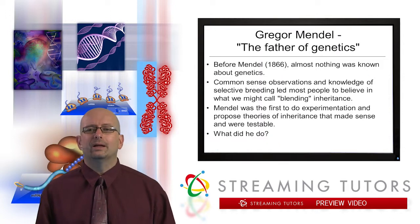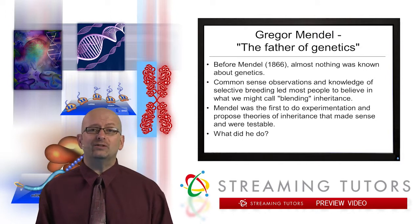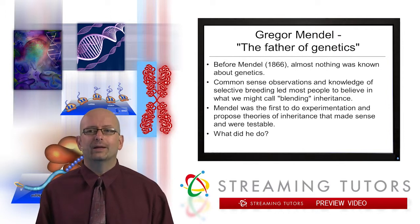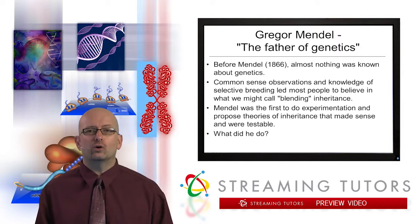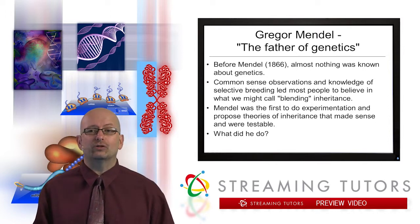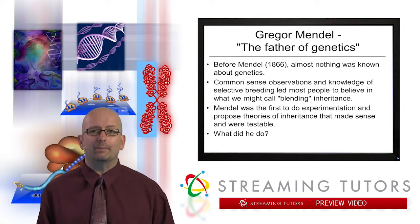Let's start by looking at some general historical facts and ideas about genetics before Mendel, because for most of human history, people knew very, very little about how information was transmitted from parents to offspring. Before Mendel — who did his work in the mid to late 1800s — almost nothing was known about genetics. There were observations, even by non-scientists, that led people to believe in a theory called blending inheritance.